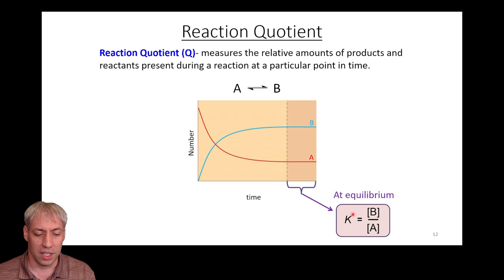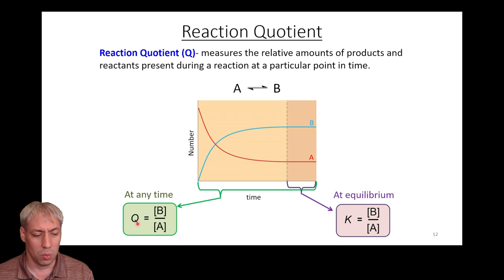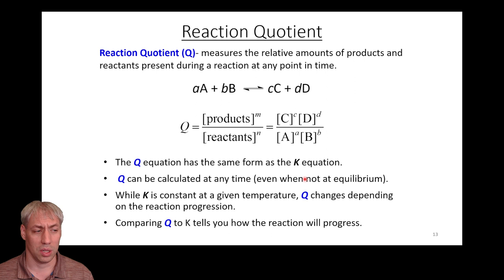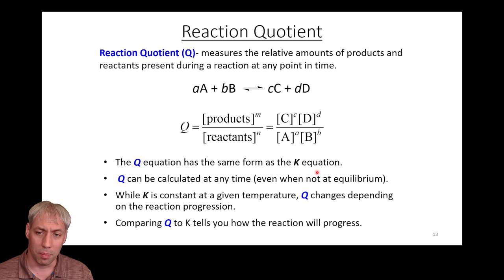At equilibrium we use the K equation — the equilibrium constant equals products over reactants. But we can do that same math at any time, whether it's at equilibrium or not. The reason you would want to do that is because Q tells you where the reaction is relative to K, and tells you if it's at equilibrium or going to shift to reach equilibrium. The reaction quotient is the exact same equation as the equilibrium constant, but it doesn't necessarily mean you're doing this math at equilibrium. Q will change as the reaction progresses, and eventually when it reaches equilibrium, Q will equal K.